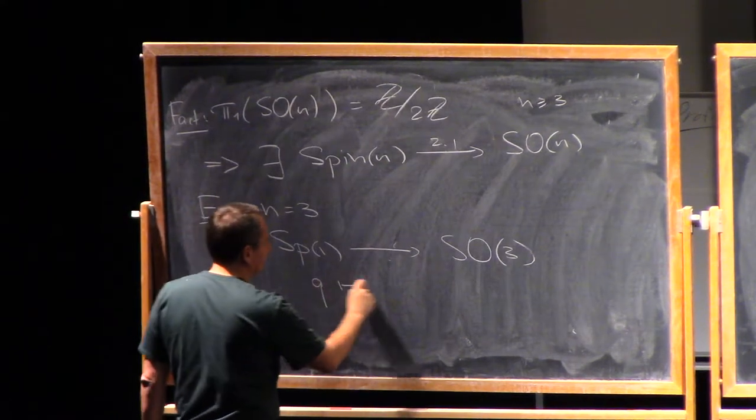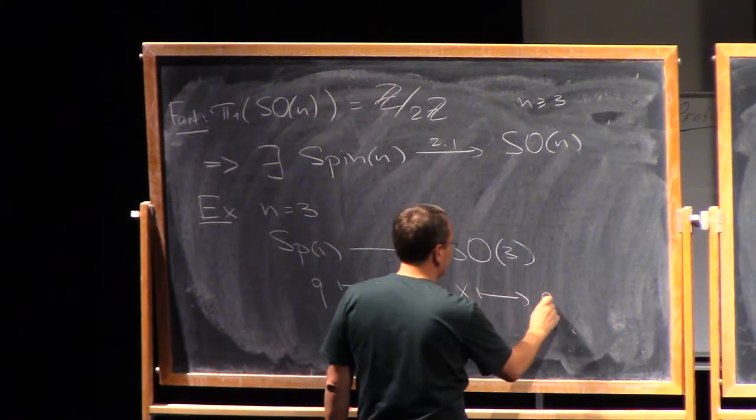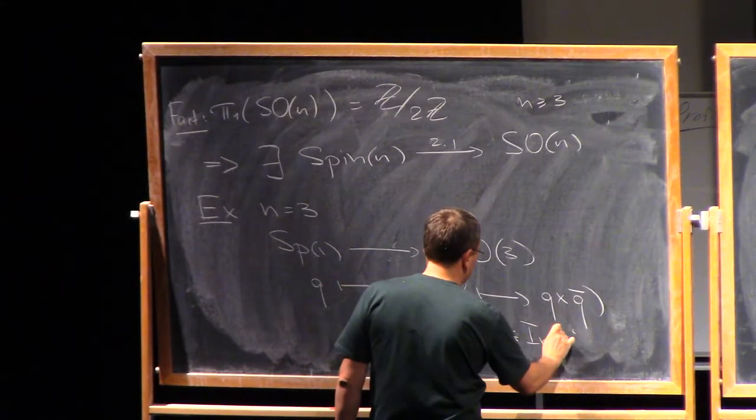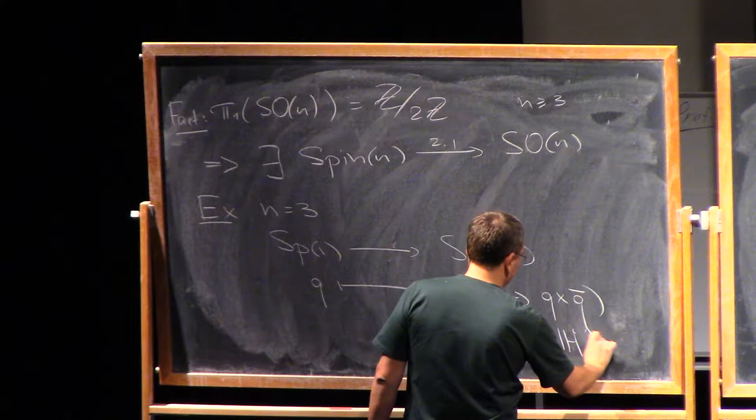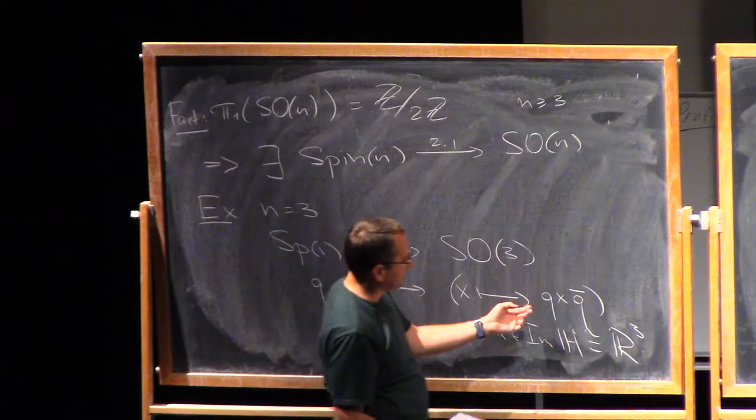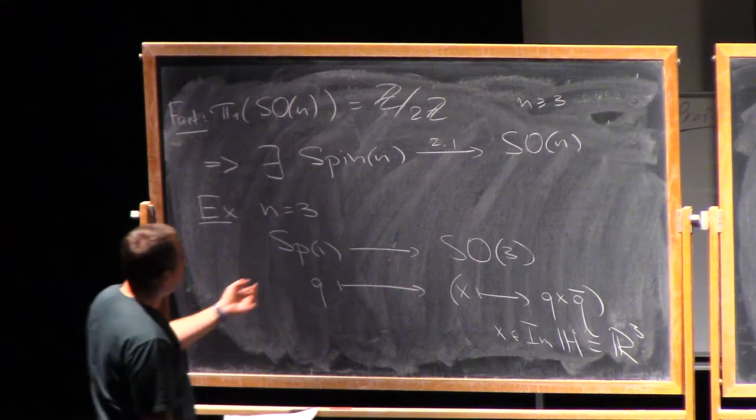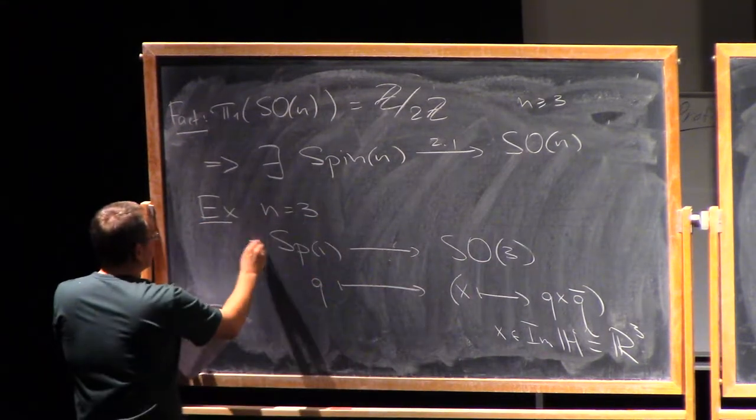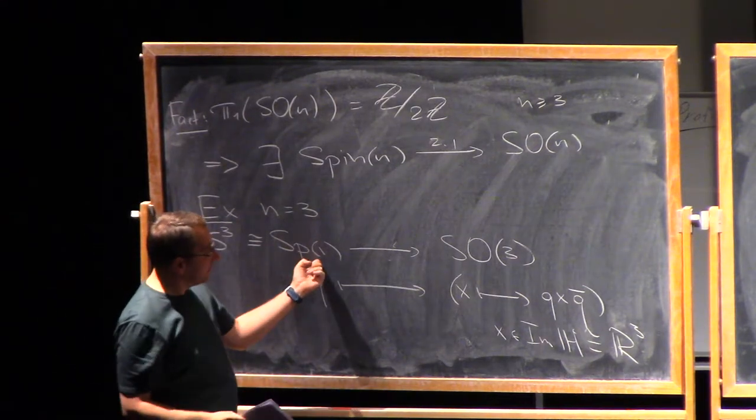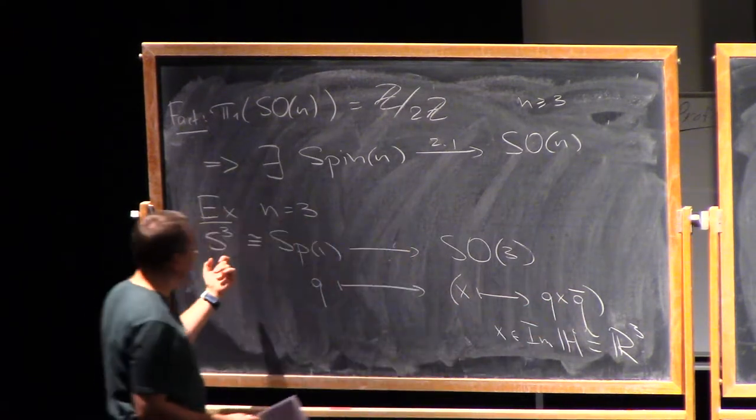So, if I have Q here, I can map it into the map X goes to QX Q bar, where X is an imaginary quaternion. And so, I can think of this as a vector in R3. Right? You can easily check that this is an orthonormal transformation of R3. And this gives us a map from SP1 into SO3. So, topologically, this is the 3-sphere. And so, we know that this is simply connected.